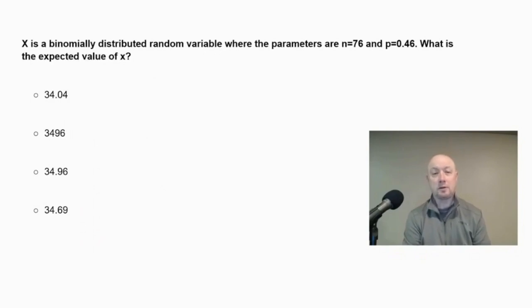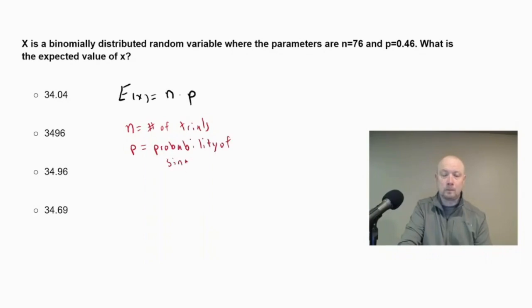X is a binomially distributed random variable where the parameters are n equals 76 and p equals 0.46. What is the expected value of x? Okay, in a binomial distribution, the expected value formula e is equal to n times p. Now n represents the number of trials and my p represents probability of single trial.